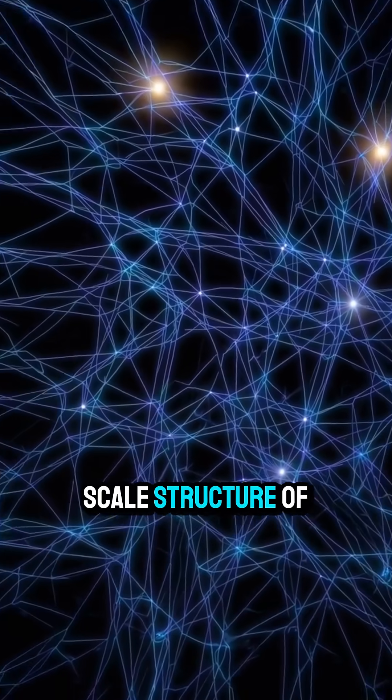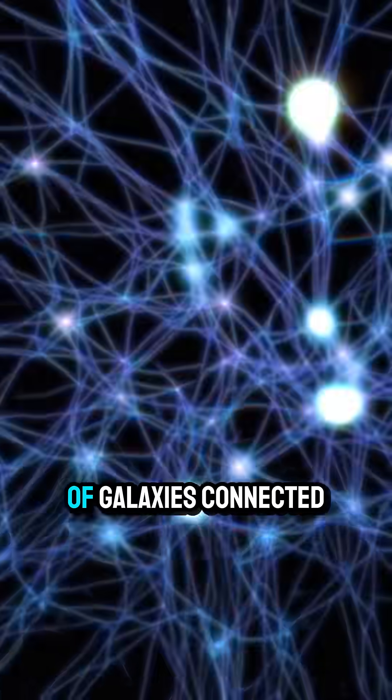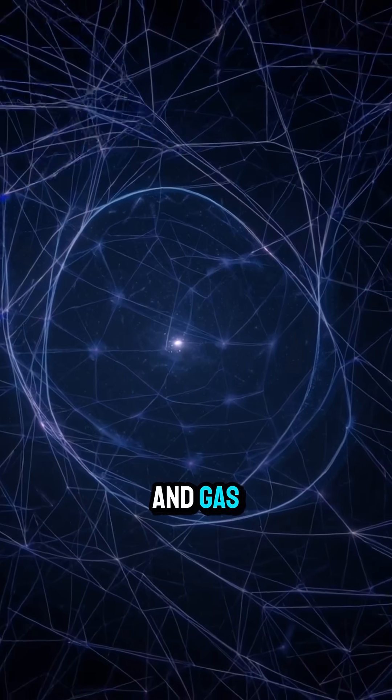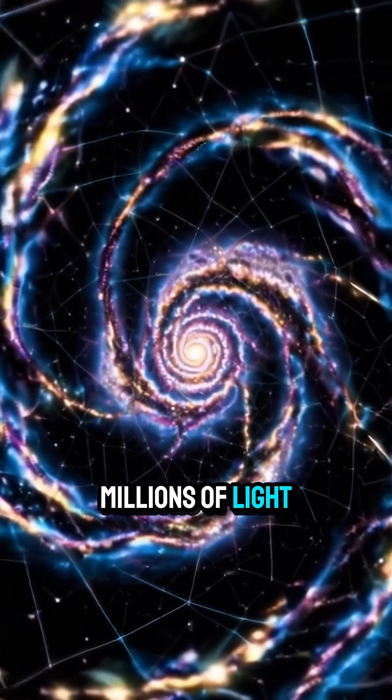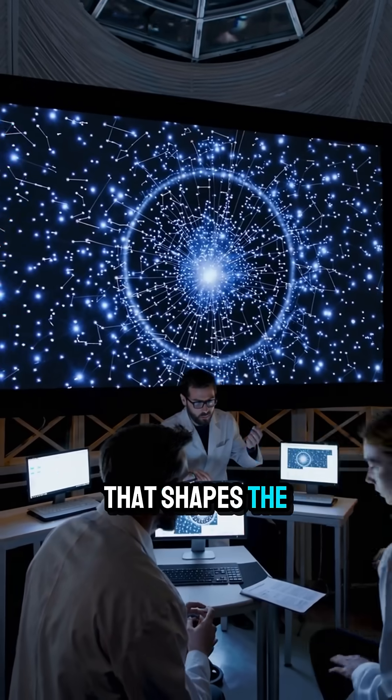The cosmic web is the large-scale structure of the universe, made of billions of galaxies connected by dark matter and gas. These filaments stretch for hundreds of millions of light-years, forming a network that shapes the cosmos.